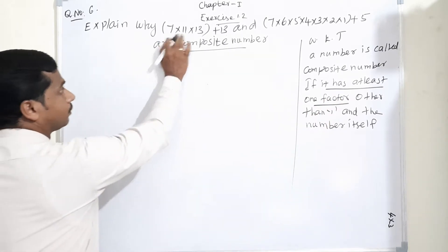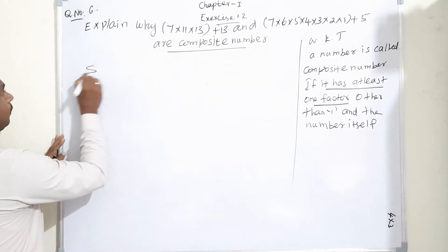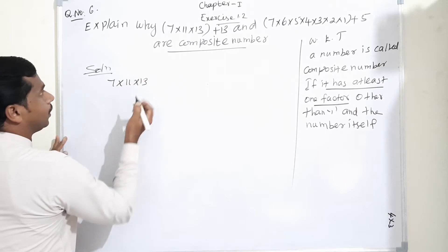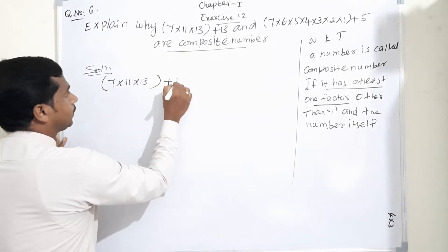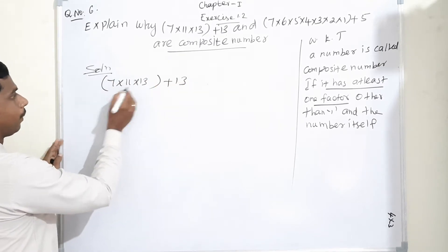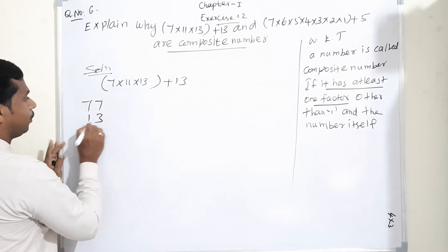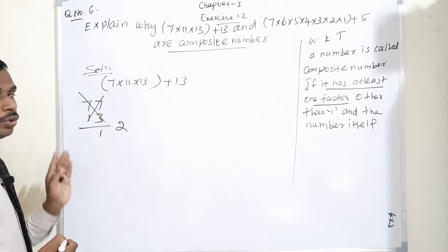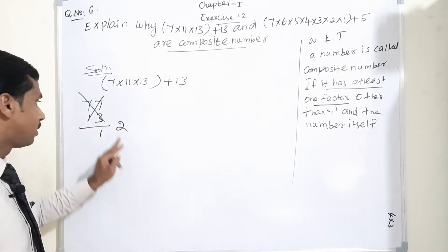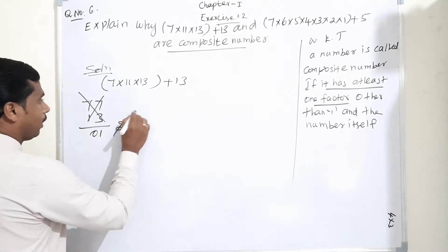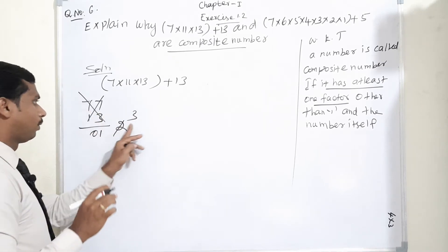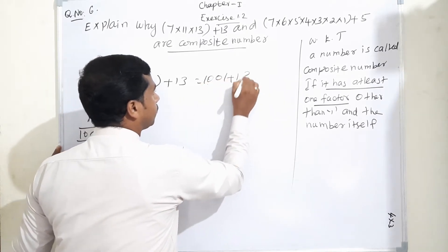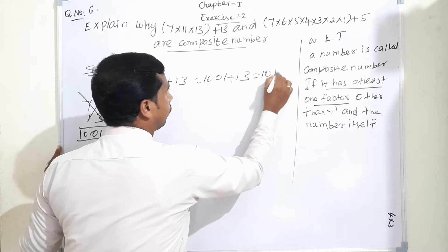I am going to take the first condition. Solution: 7×11×13 plus 13. First, we need to multiply 7×11 which is 77, then multiply by 13. So, 3×7 is 21, carry 2. 1×7 is 7, 7×3 is 21. 21 plus 7 equals 28. 28 plus 2 equals 30, so carry 3. 1×7 is 7, 7 plus 3 equals 10.